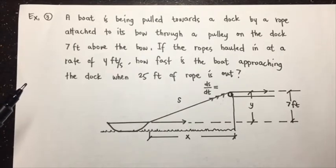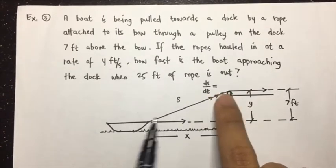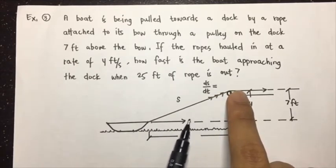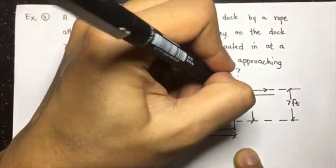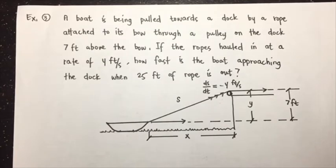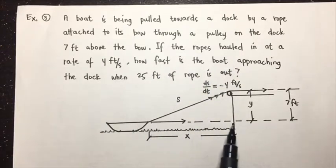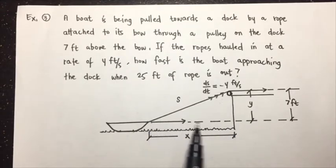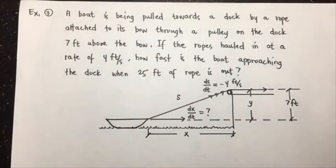We have to be aware of the signs — rates can be positive or negative. Since s is decreasing as the boat approaches, the length of the rope decreases, so we must account for that: ds/dt is negative 4 feet per second. What we are looking for is the velocity of the boat — how fast it is approaching the dock — which is the horizontal rate dx/dt.